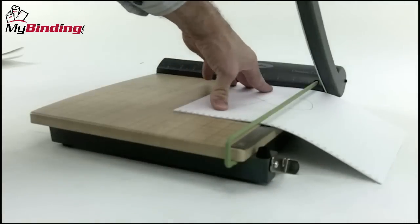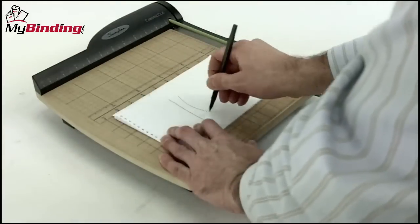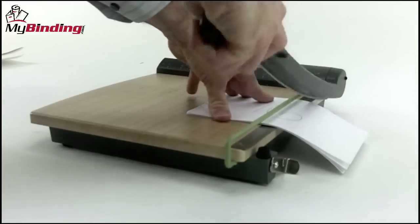Classic Cut Pro 12 can handle up to 15 sheets of 20-pound paper per cut. That was eight. This is 16. No problem.